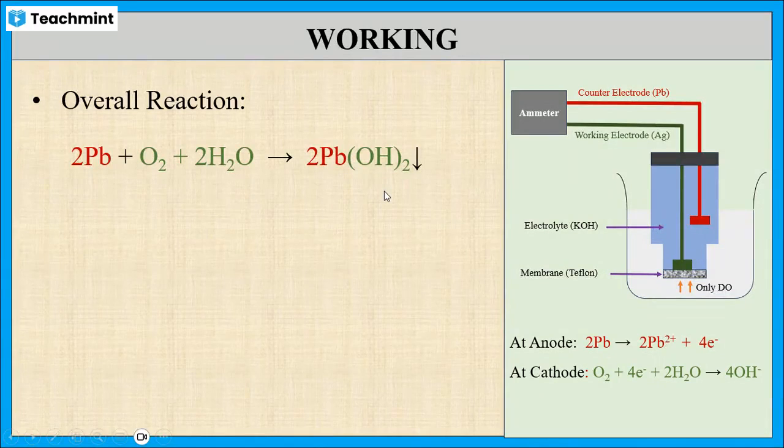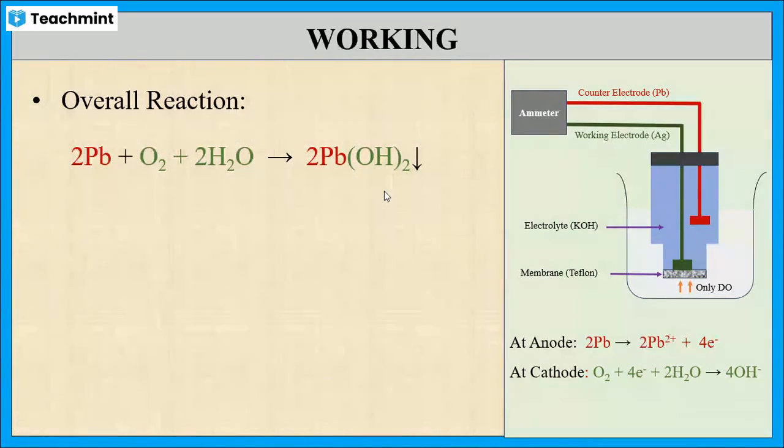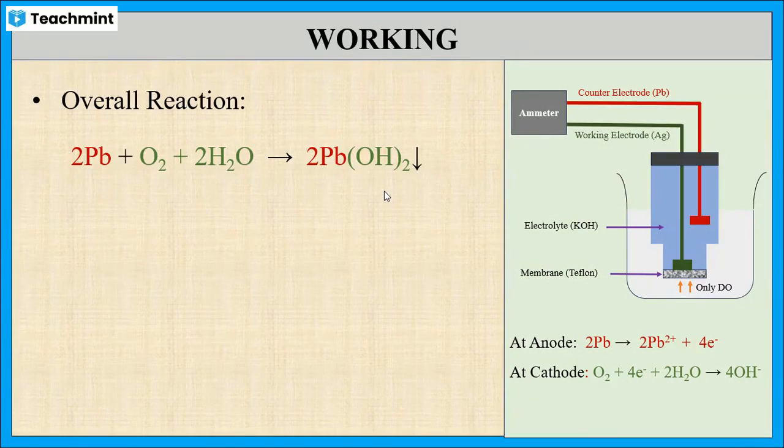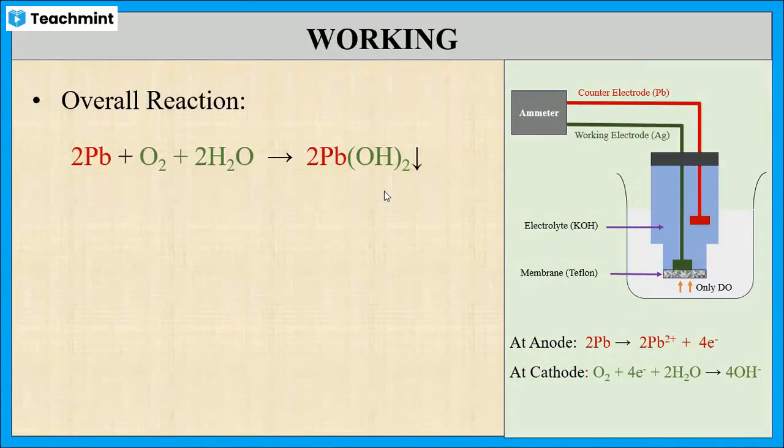The lead hydroxide is precipitated out into the electrolyte solution. However, it neither coats the anode nor consumes the electrolyte. Hence, it does not affect the sensor's performance.